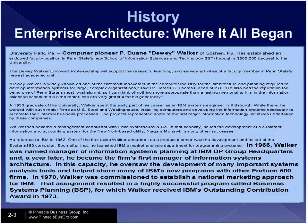As you can see from this slide, Dewey was named Manager of Information Systems Planning at IBM, and a year later he became Manager of Information Systems Architecture — a fascinating name change. What they realized at IBM in 1967 is that you have to have architecture before you can plan things. In this capacity he oversaw development of important systems analysis tools and helped share programs with Fortune 500 companies. In 1970, Dewey was commissioned to establish a national marketing approach for IBM.